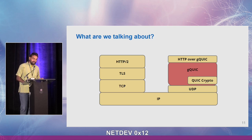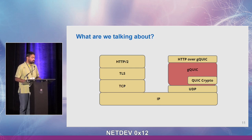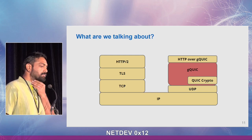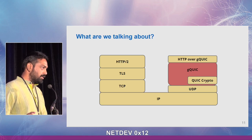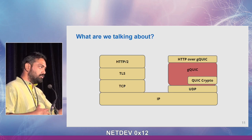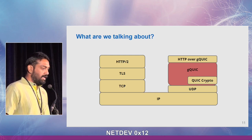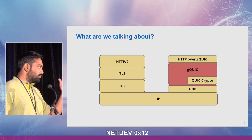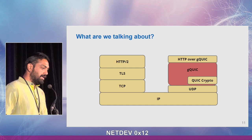GQUIC as we had it at Google had something called QUIC crypto, which effectively replaced TLS. It was a completely different protocol — a new handshake protocol that worked in concert with QUIC not just to exchange keys, but also to encrypt packets and everything else. HTTP ran on top of that. We had a mapping that allowed us to provide the same service as HTTP/2, but with a completely different shim sitting on top of QUIC. Of course, it all ran on top of UDP.